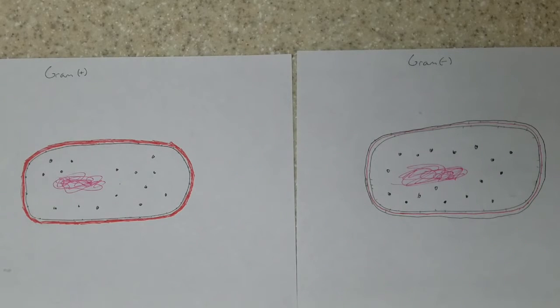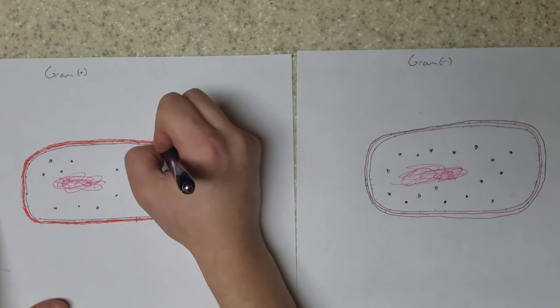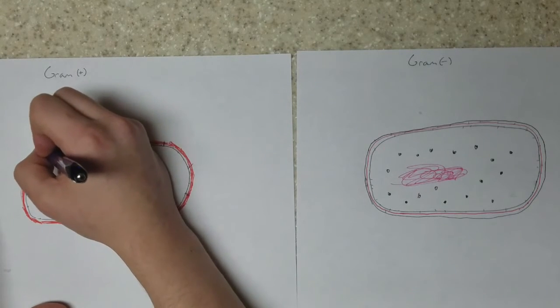And then on the gram-positive cell here, I'm drawing lipoteichoic acid, which reaches from the plasma membrane all the way to the cell wall.